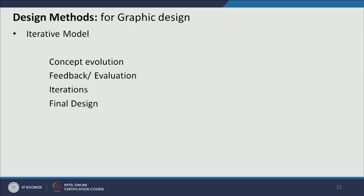After this synthesis and analysis, we go to the design process. There will be concept evolution, then feedback and evaluation by the user, then iterations. Based on the iteration it can go back to concept evaluation again if there are major changes required, or some iterations can be done and again go back for user testing. This is the iterative process of design, and then the final design will come if the user feedback is satisfactory.